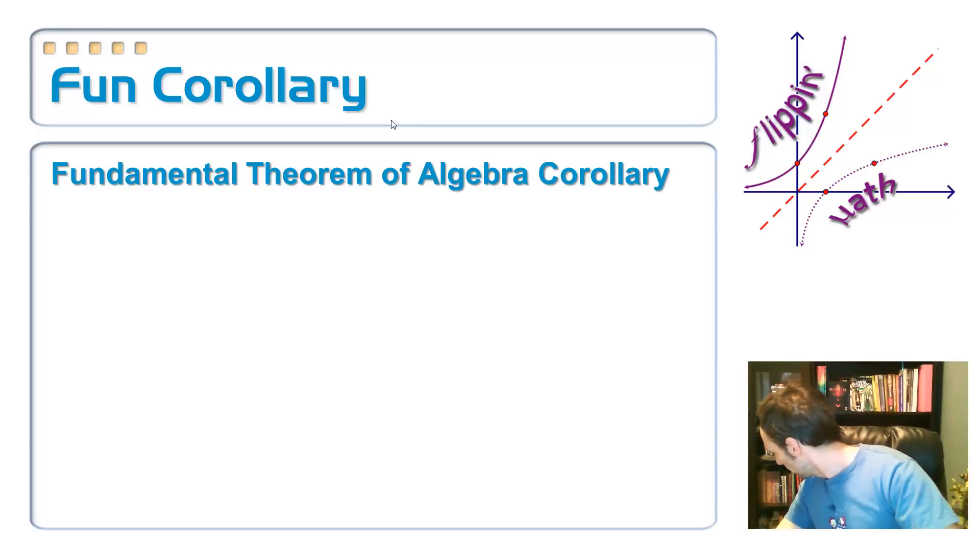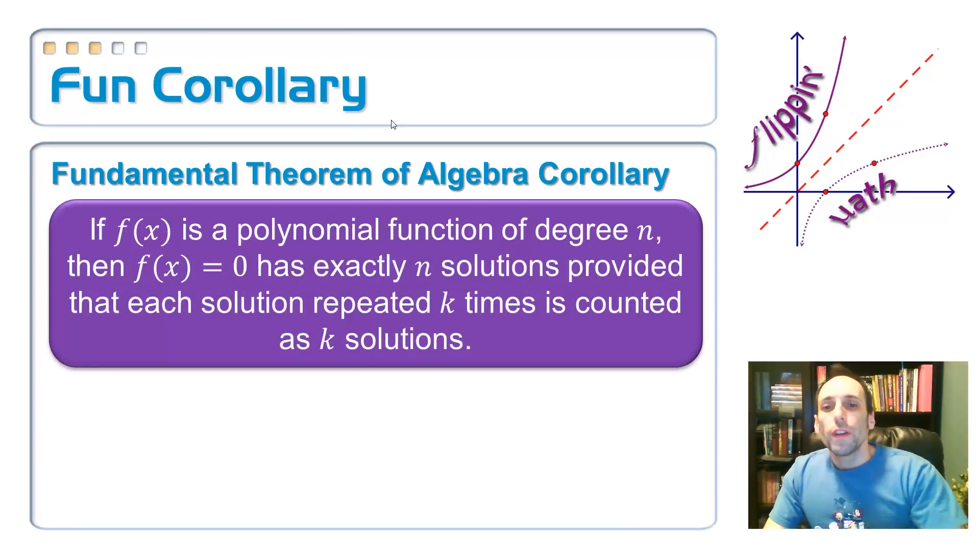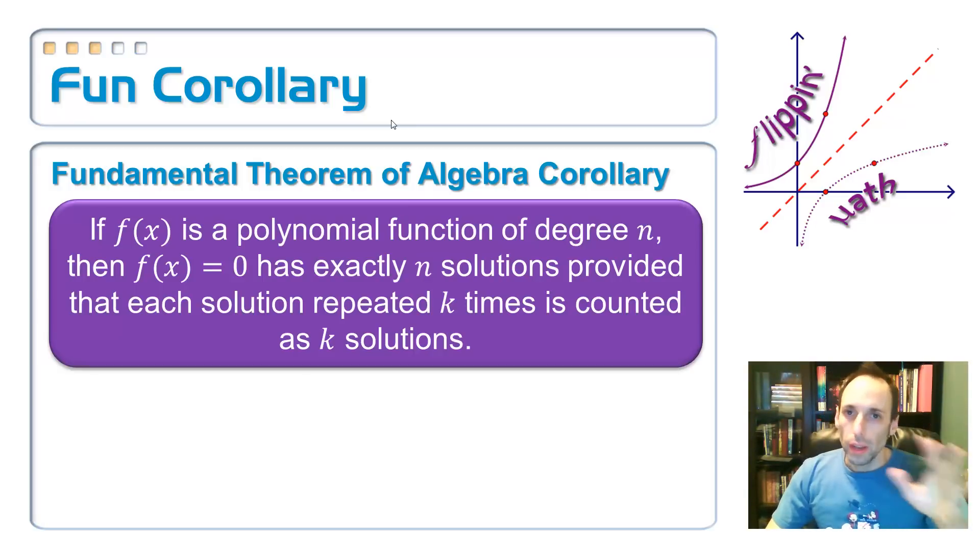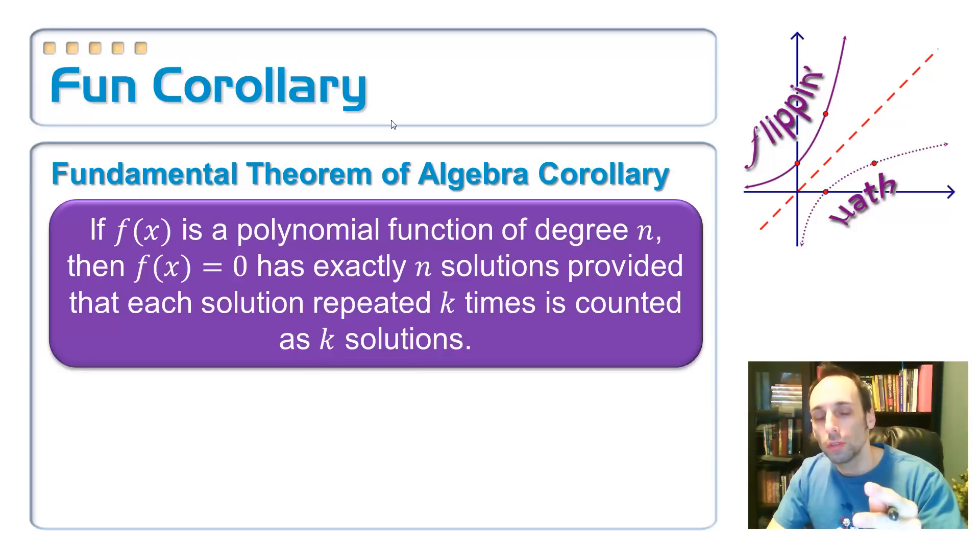So, here is, somewhat more useful, a corollary. So, here's the fundamental theorem of algebra, a corollary. So, if f of x is a polynomial function of degree n, so third degree, fourth degree, whatever, then f of x has exactly n solutions. So, fifth degree has five solutions. That's what we've been talking about. Provided that each solution that's repeated k times counts as k solutions. So, if it repeats twice, it counts as two solutions. Now that's a little bit more useful.